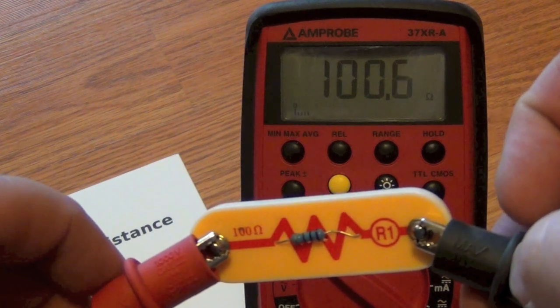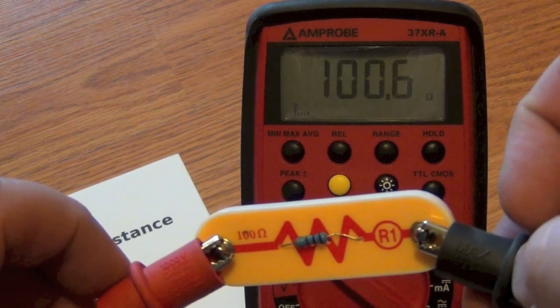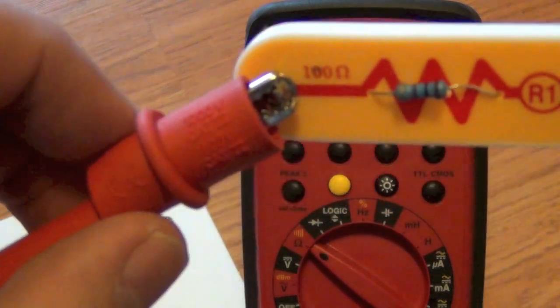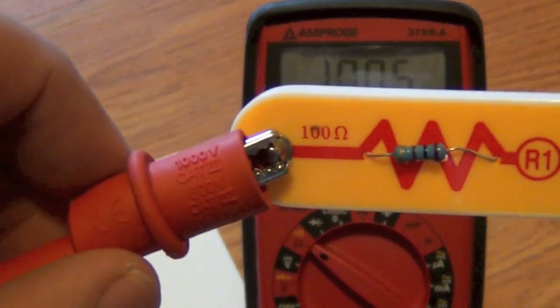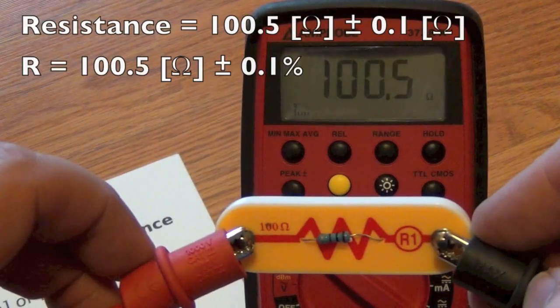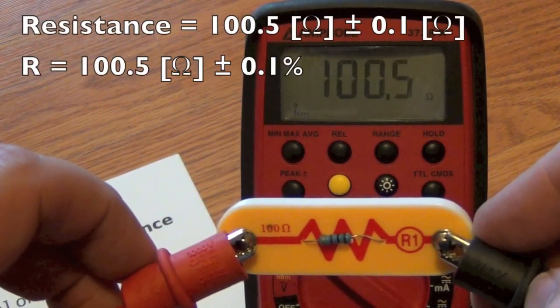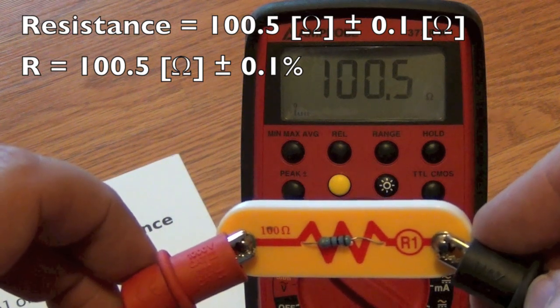This reads 100.6, or 7, or 0.7. On the resistor itself, it says about 100 ohms. We'll record this measurement as 100.5 plus or minus 0.1 ohms.